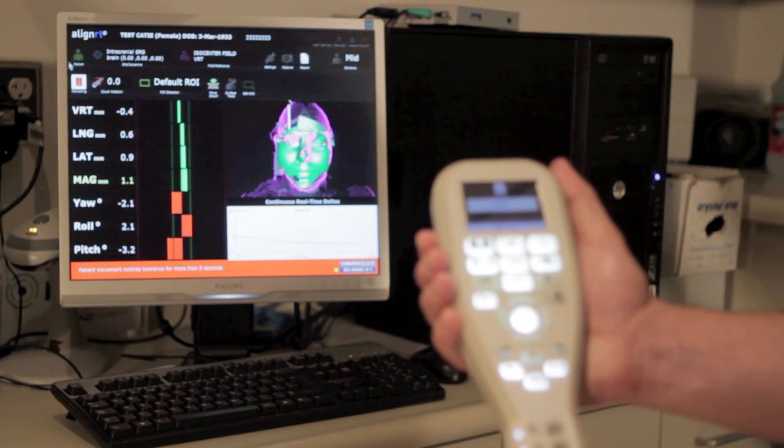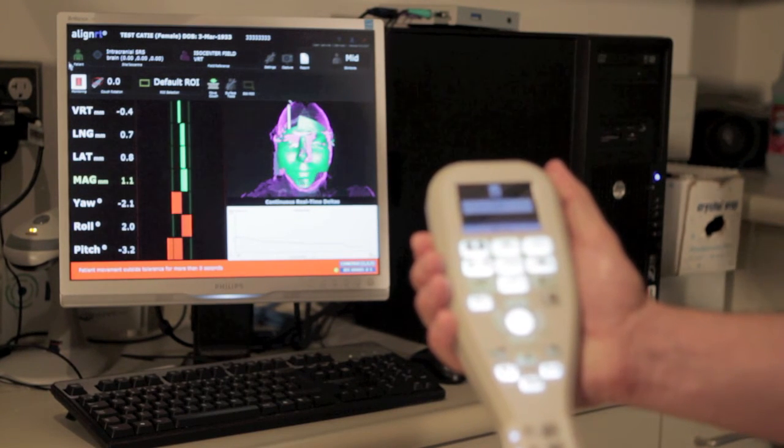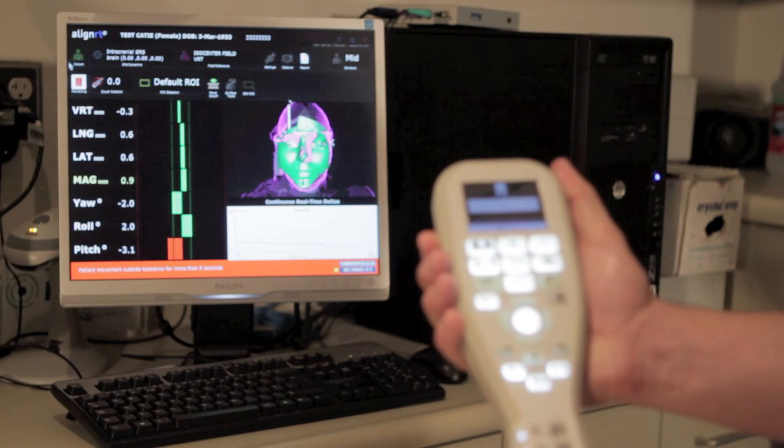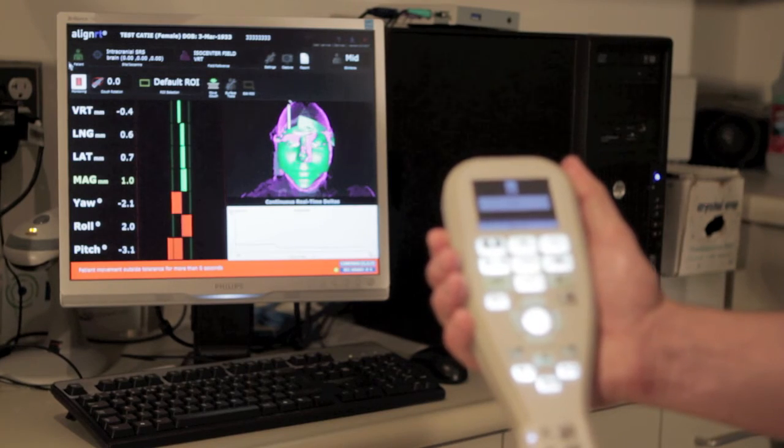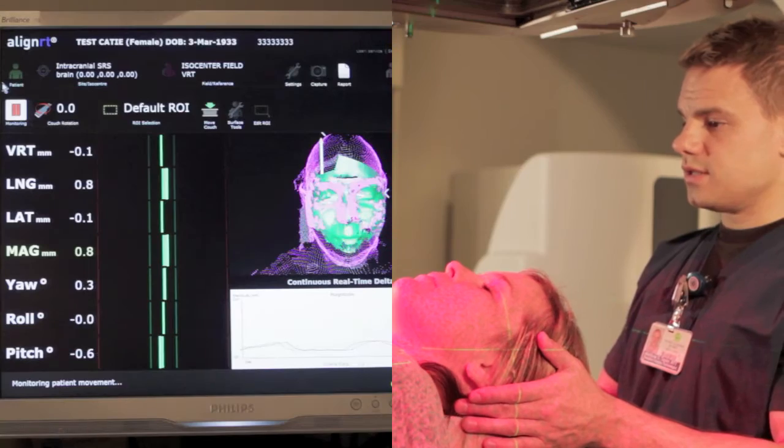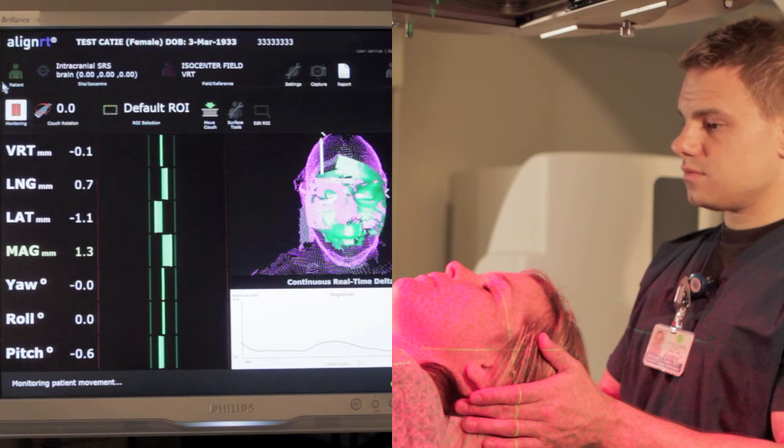We will first use AlignRT for applying gross corrections without the mask on the patient. As I look at AlignRT, I can make any of the large movements by manually moving the patient. If you see that you need to make some gross adjustments, you might need to pull the patient's shoulders over to one side, for example, to adjust the yaw.